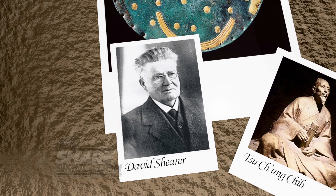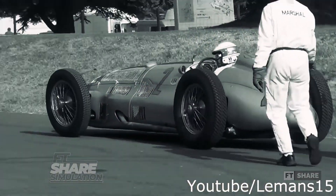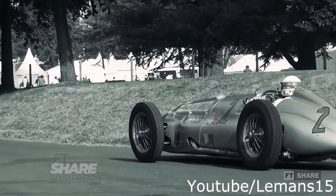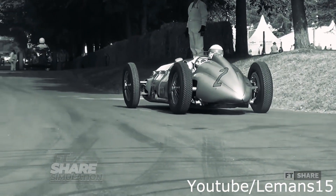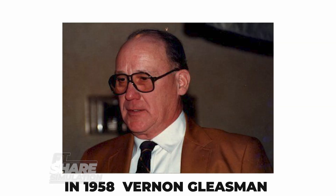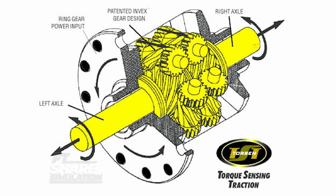The story continues in 1932, when Porsche developed and patented the Limited Slip Differential, abbreviated as LSD. In 1958, besides Porsche, Vernon Gleesman also contributed to the development and patenting of the torsion dual-drive differential.